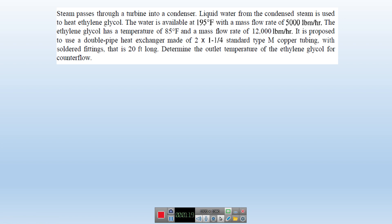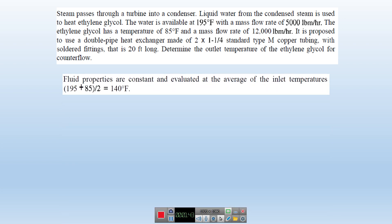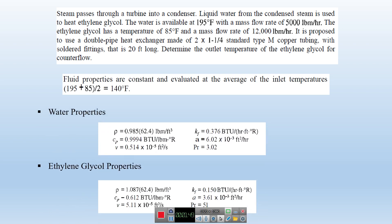To design any heat exchanger, the first step is to find thermophysical properties. To find these properties, you need a reference temperature — normally the average of inlet and exit temperature. Here, both exit temperatures are unknown, so you can start from the inlet temperature, calculate the average temperature at the inlet, and use that to find thermophysical properties.